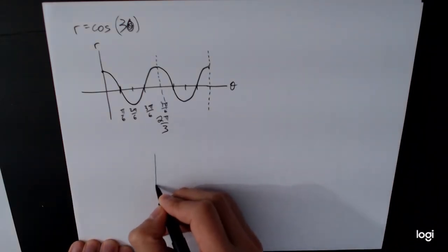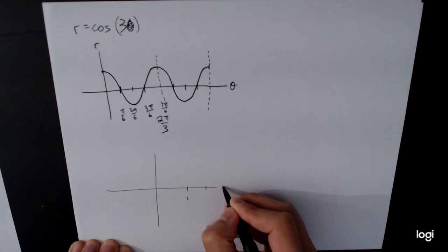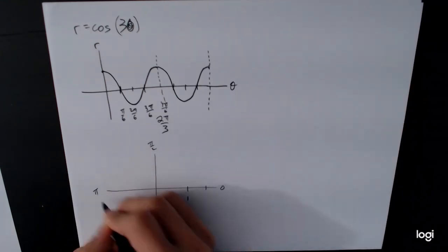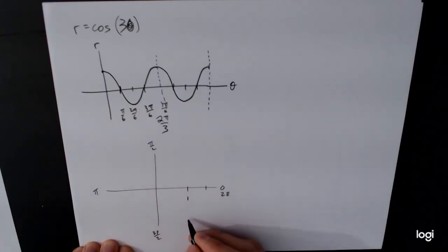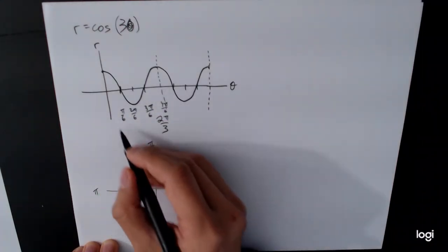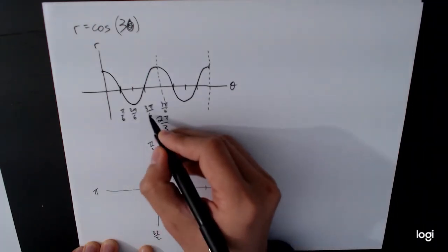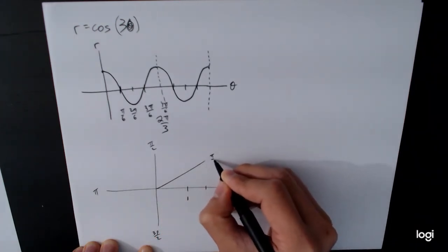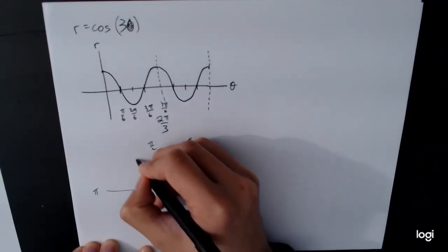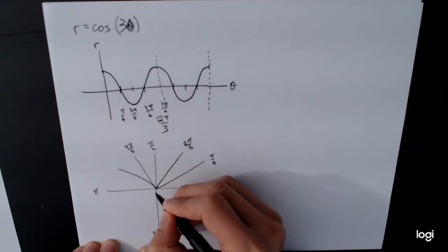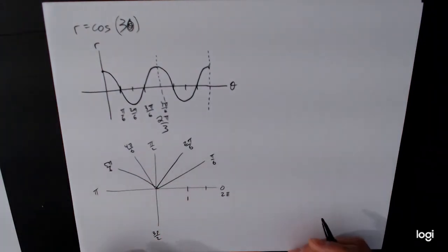Setting up the polar graph with radius 1 marked. The angles 0, pi over 2, pi, 3 pi over 2, 2 pi are marked as before, but now we need to increase subdivisions to pi over 6. So pi over 2 needs three subdivisions: pi over 6, 2 pi over 6, 3 pi over 6. Then 4 pi over 6, 5 pi over 6, and so on — filling these out as we go.